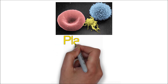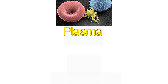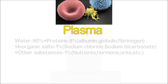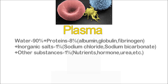Plasma is composed of water, proteins, inorganic salts, and other substances. Water constitutes 90%, protein is 8%. The plasma proteins are albumin, globulin, and fibrinogen.